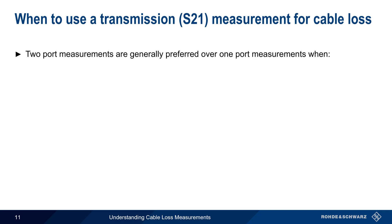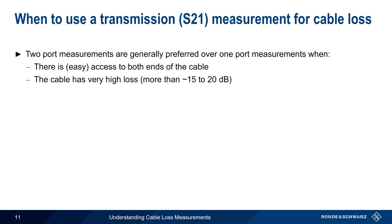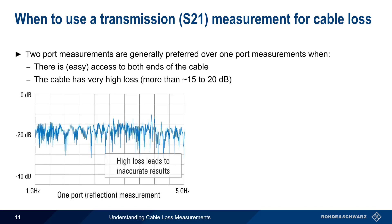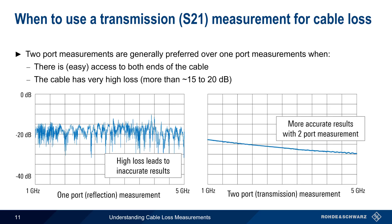Two-port measurements, also called transmission or S21 measurements, are generally preferred over one-port measurements in two cases. The first is when there is easy access to both ends of the cable. The second is when the cable has very high loss — more than about 15 to 20 dB. High levels of loss tend to produce less accurate one-port measurements. In this one-port trace, we see significant attenuation, and therefore the one-port measurement results should be viewed with caution. Making a two-port measurement of the same cable provides a more accurate and more repeatable test result.